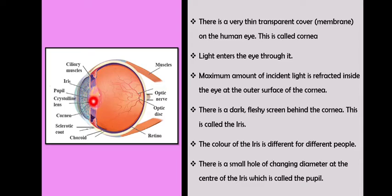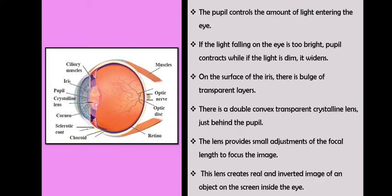The pupil is just a small hole which can change its diameter. The pupil can control the amount of light entering the eye.